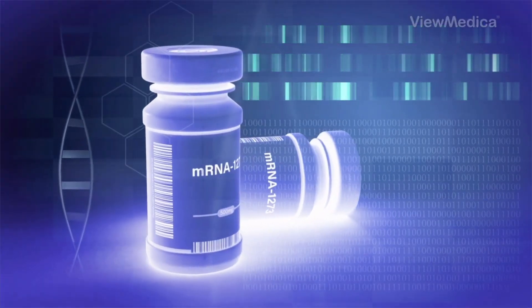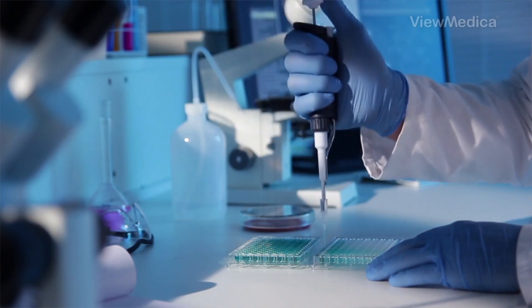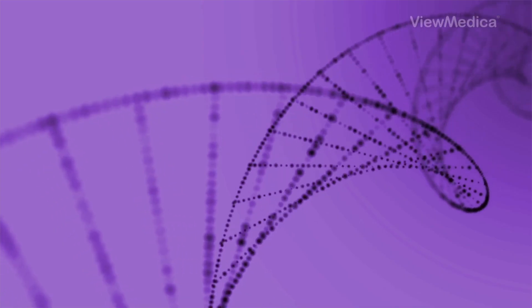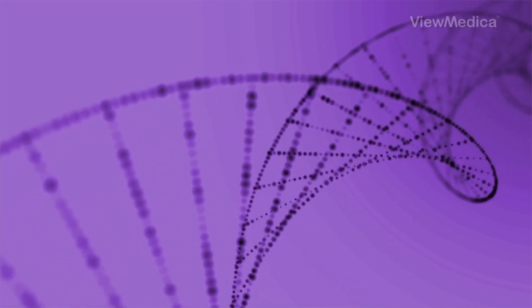mRNA vaccines work in a different way. They don't contain any part of the actual germ. Instead, they contain a small bit of genetic code made by scientists called an mRNA sequence.